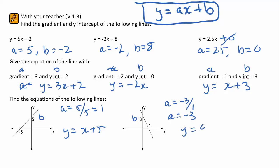So y is equal to x plus b becomes y is equal to negative 3x plus 3.